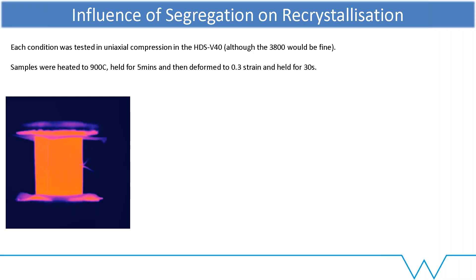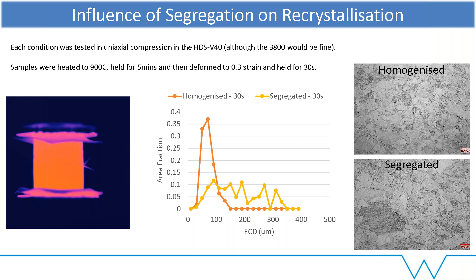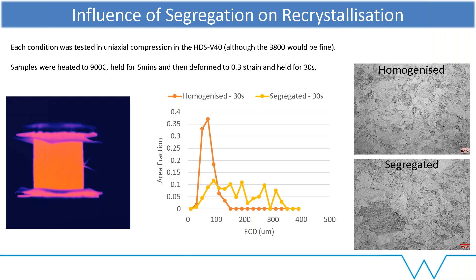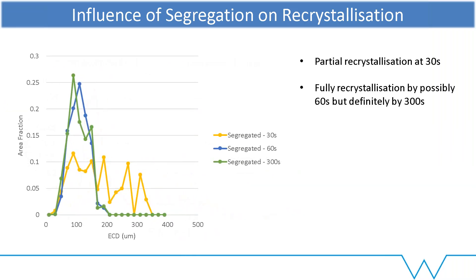As you can see, after a 30-second hold after deformation, we've got very different microstructures. The homogenised sample has a very unimodal microstructure — it looks to be fully recrystallised. Whereas the segregated sample has these really stubborn large grains. You can see from the grain size distribution it's not even — we've clearly partially recrystallised. If we run more samples and leave them for different periods of time, it looks like we're pretty much 100% recrystallised after 60 seconds, and definitely 100% recrystallised after 300 seconds. Clearly the kinetics in the segregated sample are much more stubborn than in the homogenised sample.